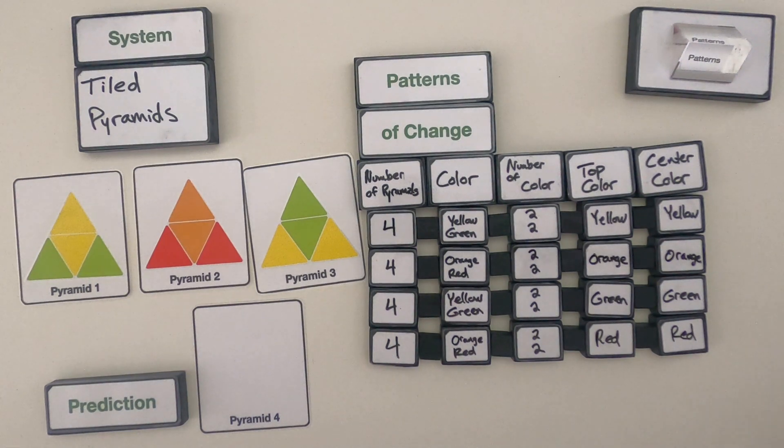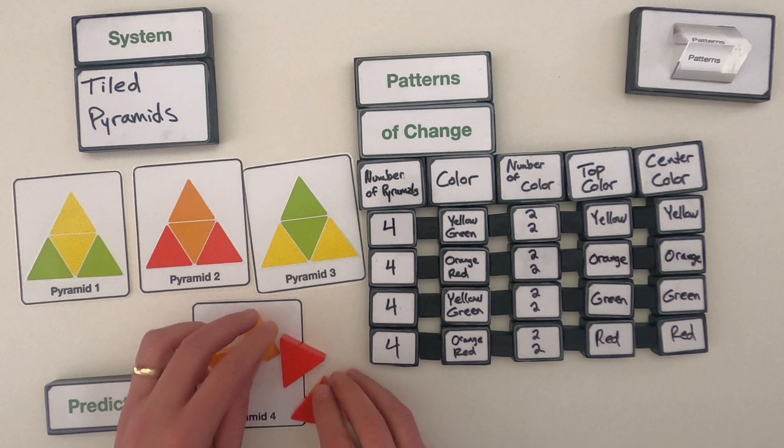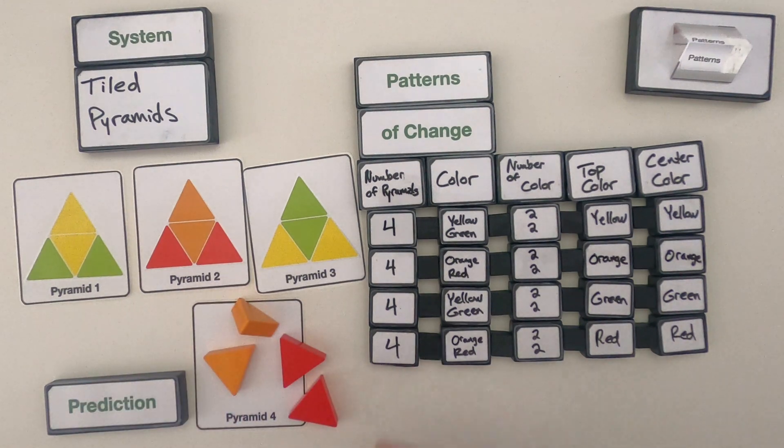So we're using really concrete examples to do this. But after I've done that, now I can start to make a prediction. So if I read across, I think there are going to be 4 tiles, or 4 pyramids within this pyramid. I think it's going to be orange and red, and we'll have 2 of each. Now I just have to figure out how they're oriented.